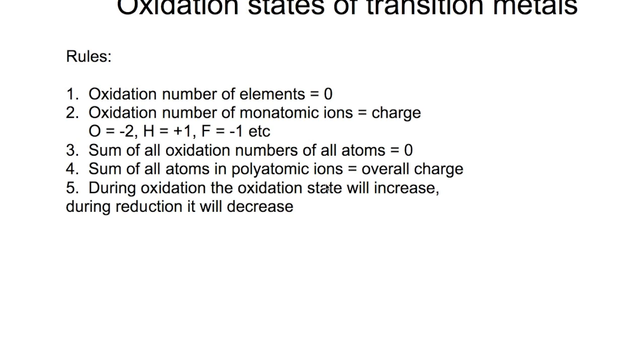for hydrogen it's plus one, for fluorine it's minus one and so on. The sum of all oxidation numbers of all the atoms that are present has to be zero. However, if you're dealing with a polyatomic ion, it must add up to the overall charge.